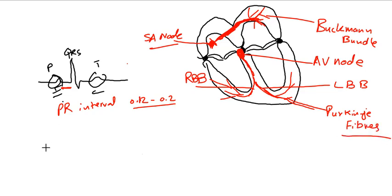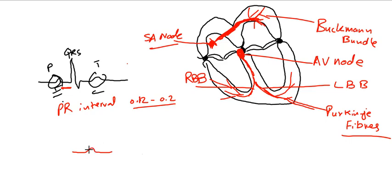Now, the P wave. The P wave represents atrial depolarization. Since it represents the atria — and the atria are small — it only takes a small amount of current and a small duration to depolarize them. Small current means low amplitude, so the height is small. Small duration means on the x-axis it is also small. That's why the P wave is a small, sharp deflection and shorter in duration.